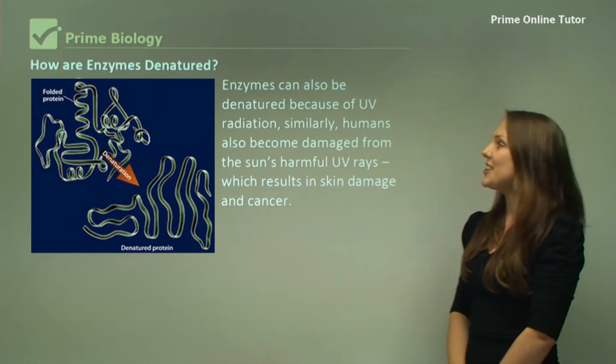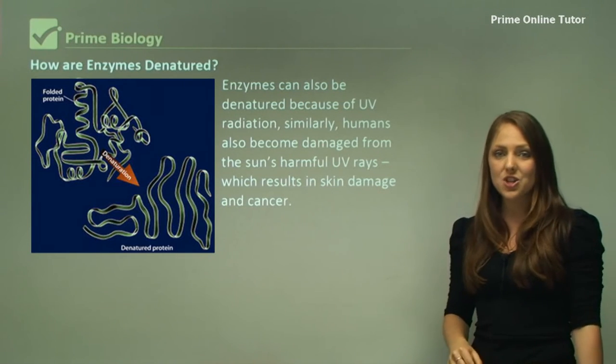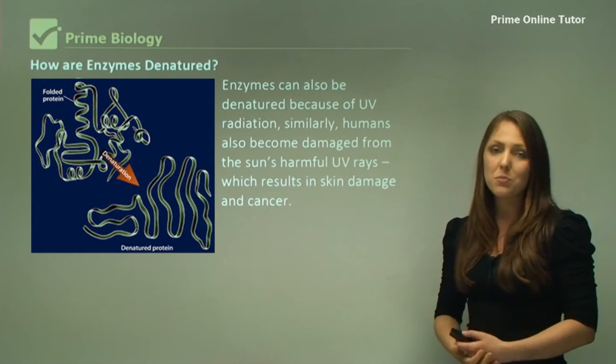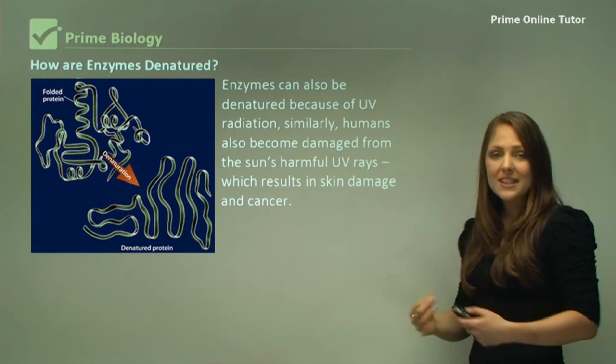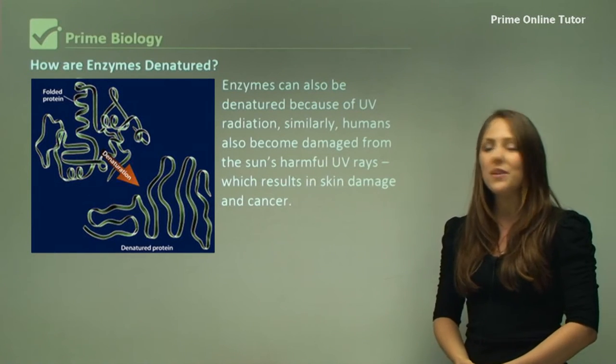How are enzymes denatured? Enzymes can also be denatured because of UV radiation. This is similar to humans. Our body can also be affected by the UV rays. We can get cancers for example from UV radiation.